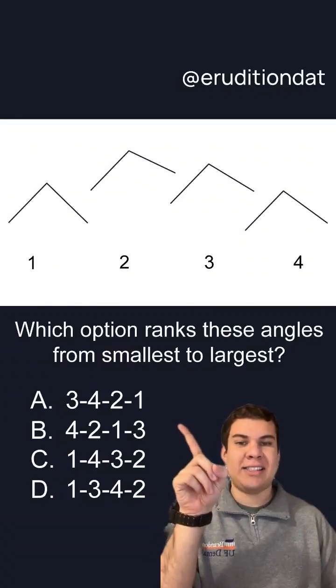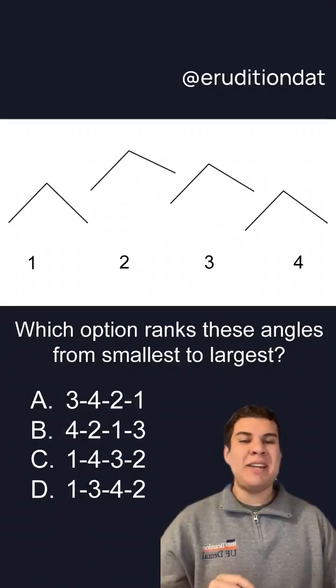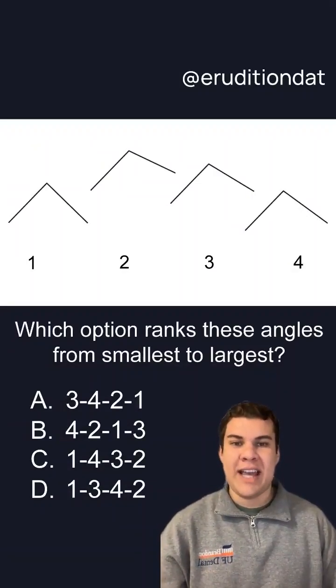So that can automatically help you eliminate answer choices A and B simply because you know that number one is going to be the smallest angle.